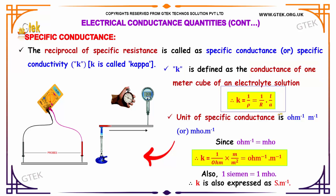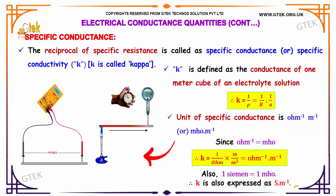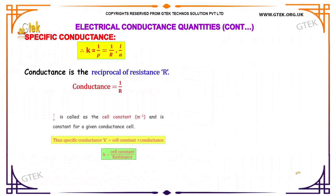Therefore kappa k equals 1 divided by rho, which equals 1 divided by R multiplied by L divided by A. The unit of specific conductance is ohm to the power of minus 1, meter to the power of minus 1, or equivalently siemens per meter (S·m⁻¹). Since ohm to the power of minus 1 is also equal to siemens, kappa k equals ohm⁻¹·m⁻¹.